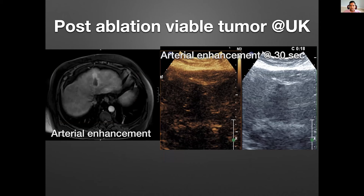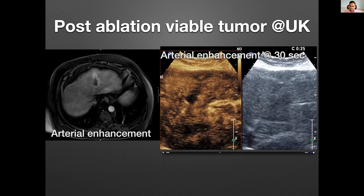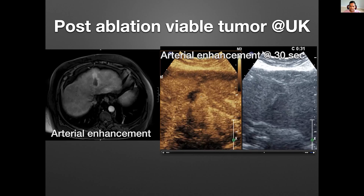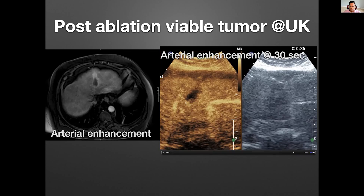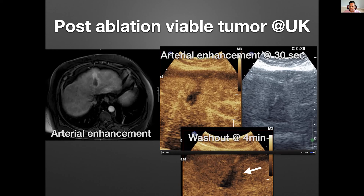You can also use these microbubbles for post-ablation viable tumor evaluation. Here is a case from our university: there is some arterial enhancement anteriorly and medially on MR — MR called it most likely viable or equivocal — and we performed contrast-enhanced ultrasound. In the arterial phase video, you can see the cavity on grayscale and a thick, asymmetric rind of arterial enhancement medially, matching the CT/MRI findings. Because of that arterial enhancement, we called it suspicious. At four minutes on CEUS, you can actually see washout corresponding to that thick rind.